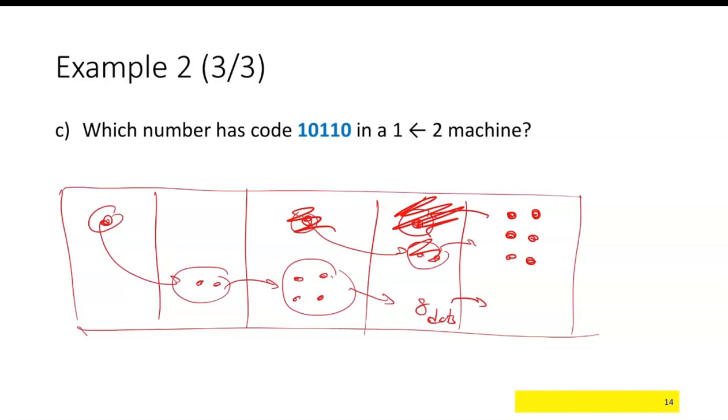And these eight dots would become 16 dots. So if you have these 16 plus these six, that's going to be 22 dots. So one, zero, one, one, zero in a two, one machine is 22 dots.